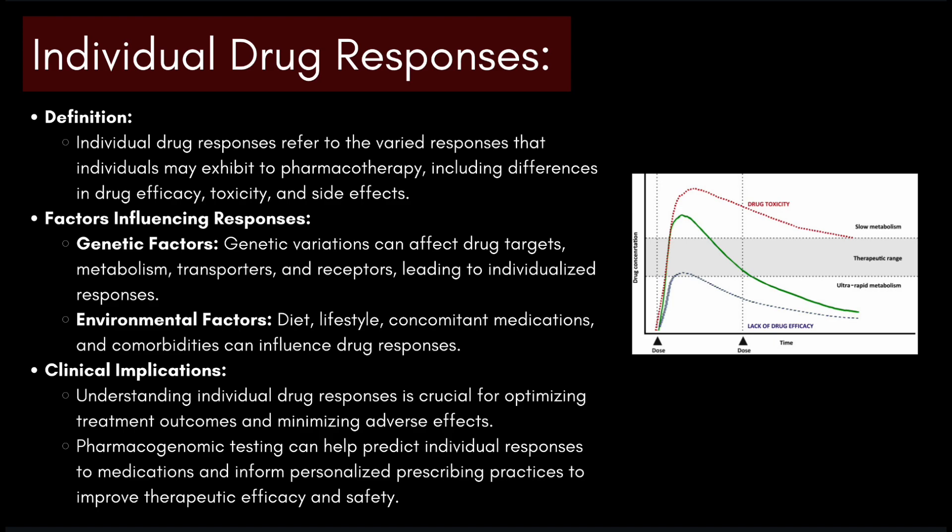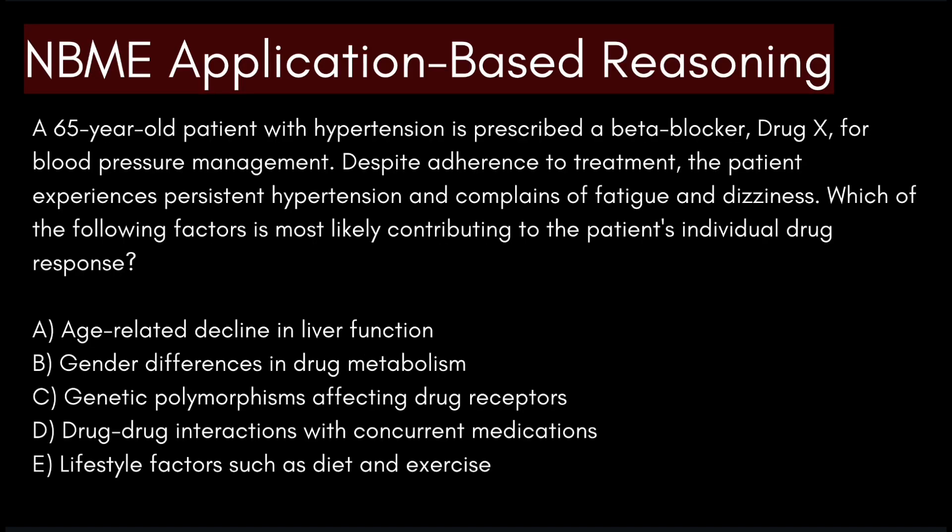Environmental factors like diet, lifestyle, concomitant medications, and comorbidities can also influence drug responses. Some clinical implications include understanding individual drug responses for optimizing treatment outcomes and minimizing adverse effects. Pharmacogenomic testing can help predict individual responses to medications and inform personalized prescribing practices to improve therapeutic efficacy and safety.